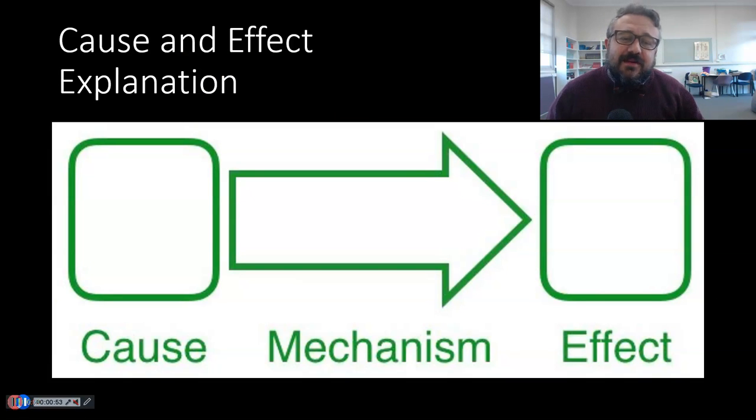So, a scientific explanation is essentially a cause and effect explanation. It's pretty straightforward, right? We go cause, effect, and in the middle we put the mechanism of what happens. So the cause is what causes the change,